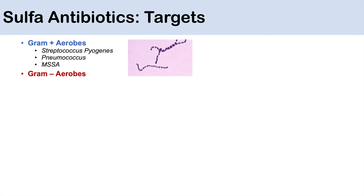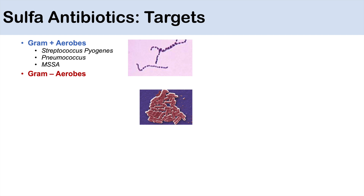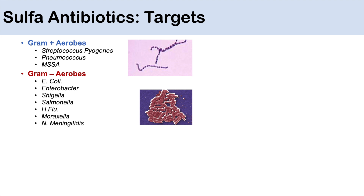Septra can also cover gram-negative aerobes like the gram-negative rod E. coli. It can also cover Enterobacter, Shigella, Salmonella, Haemophilus influenzae, Moraxella catarrhalis, and Neisseria meningitidis.